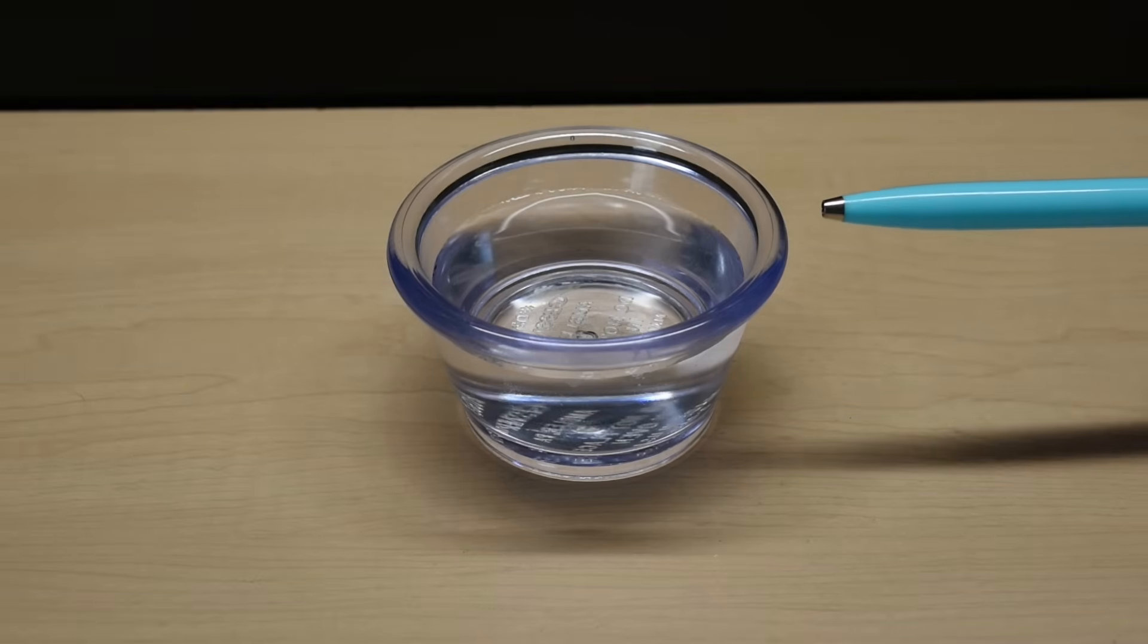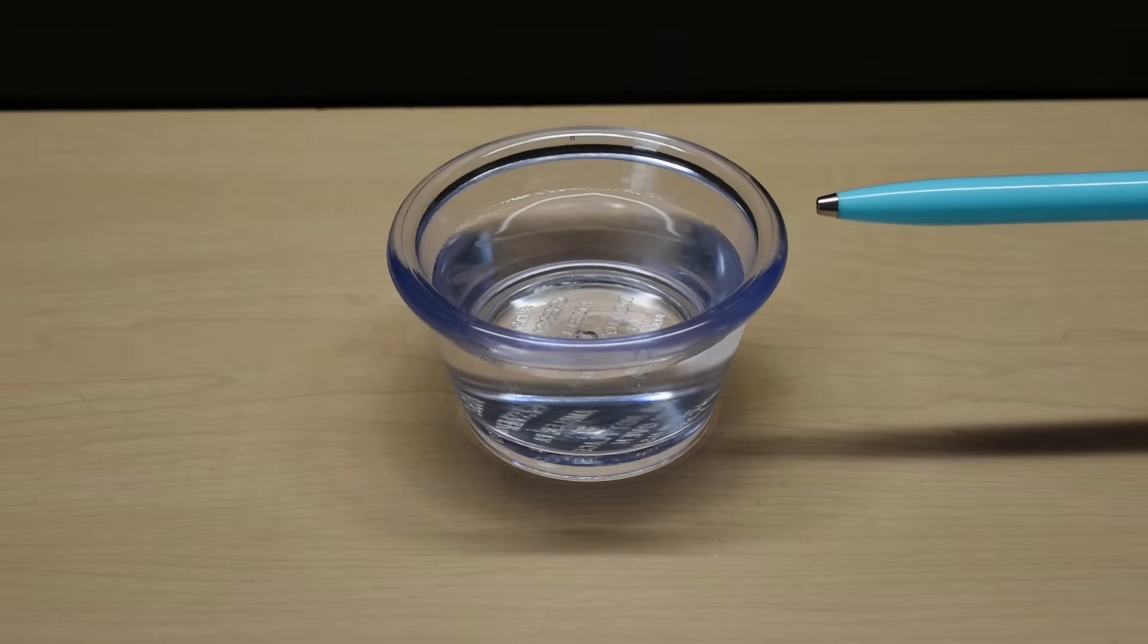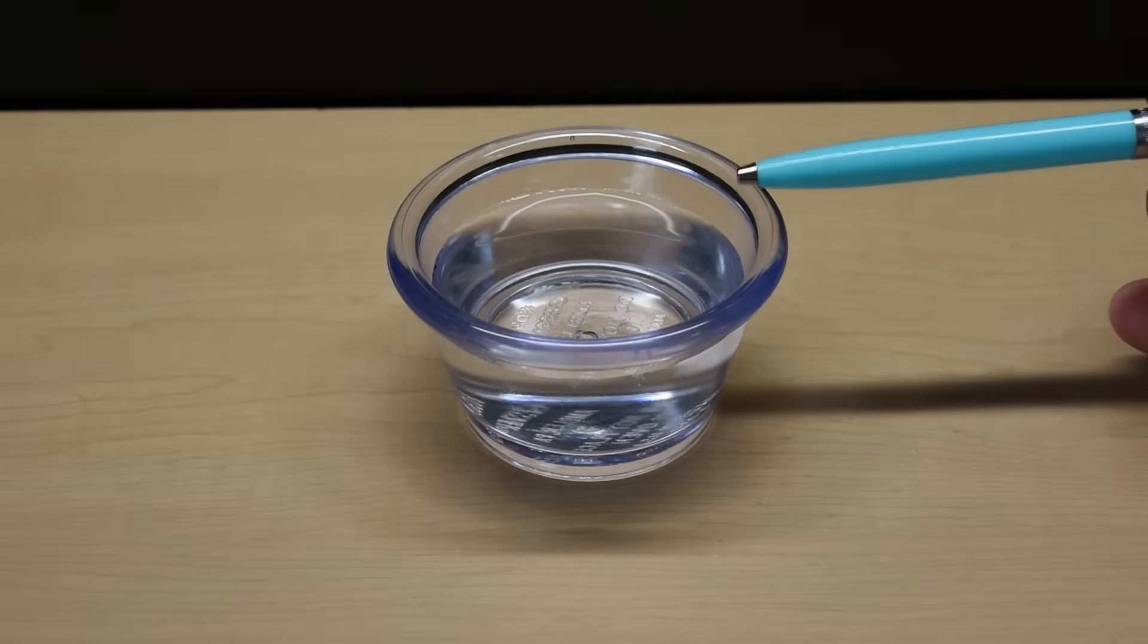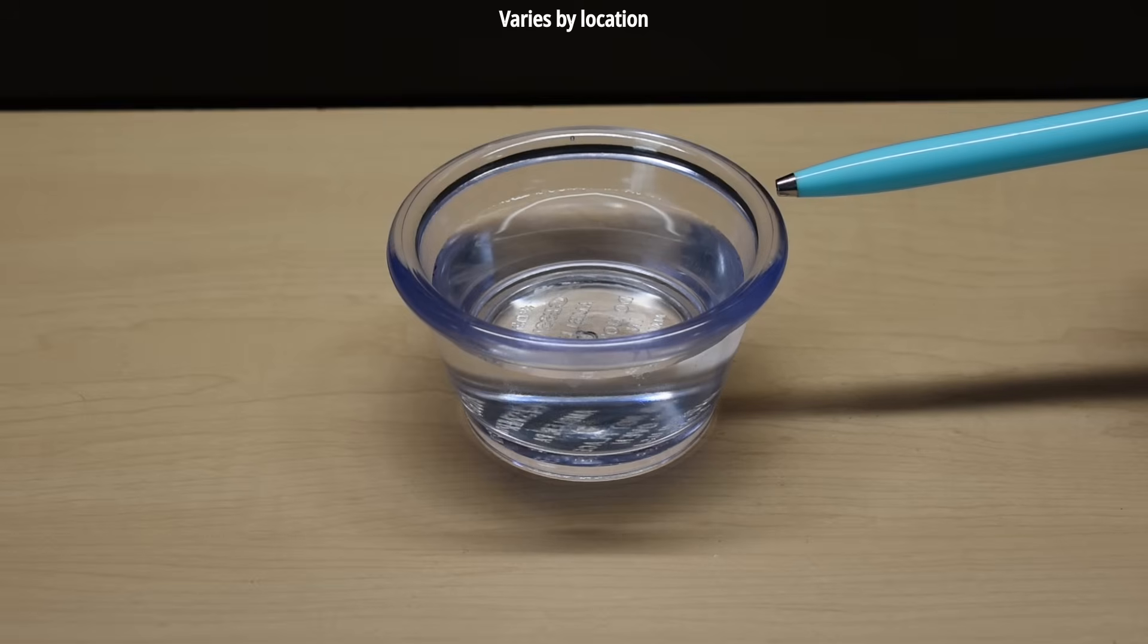Rainwater is very similar to distilled water. The difference is when the raindrops fall from the clouds on the way down, it picks up dust and pollutants. That causes the TDS of the water to have an average reading of around 20. Seawater, due to the high salt content as well as minerals, is going to give you a very high TDS reading between 20 and 40,000 parts per million.